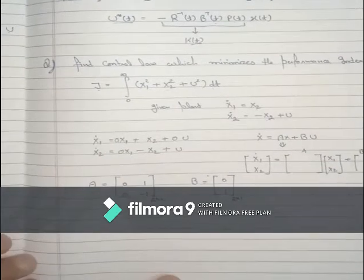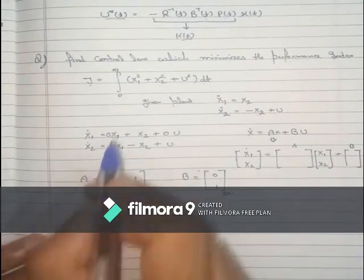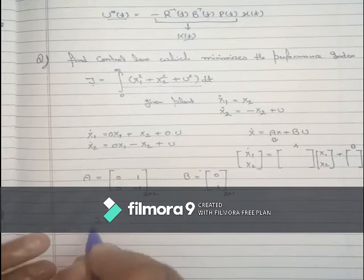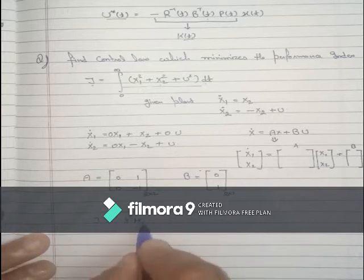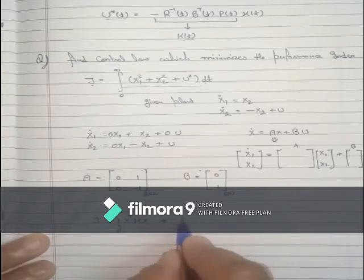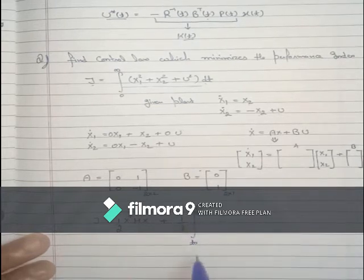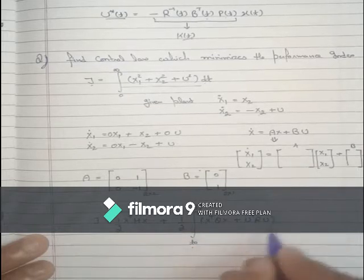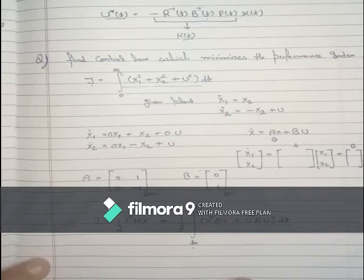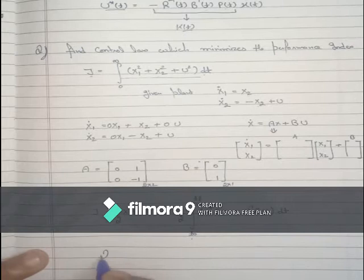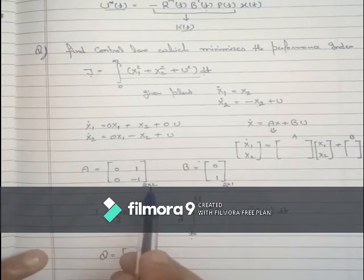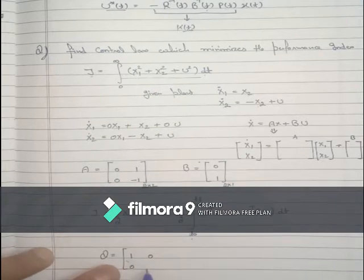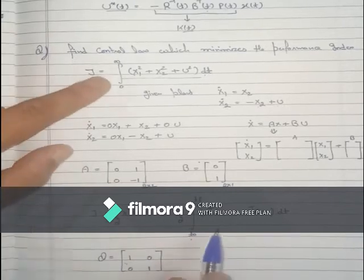Now we find the Q matrix and R matrix from the performance index J. The standard form of performance index is: integral from t0 to tF of (X_transpose Q X plus U_transpose R U) dt. Comparing to our given J, since the A matrix is 2×2, the Q matrix is also 2×2. The coefficient of X1_square is 1, off-diagonal entries are 0, and the coefficient of X2_square is 1.